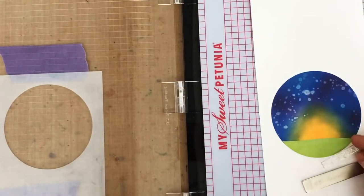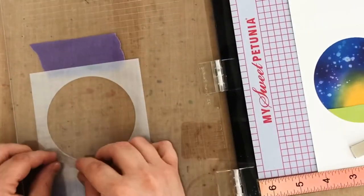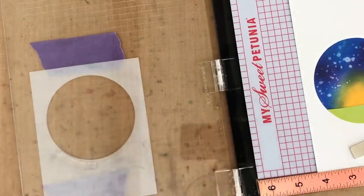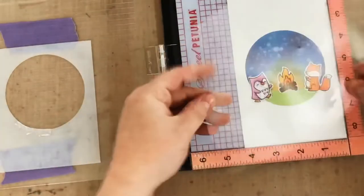Then I can put my sentiment inside my MISTI, close the lid, pick it up, but then open the lid and then use that stencil that's on the backside of the MISTI lid to help me shape that sentiment into a curve that will stamp around my little ink blended background.